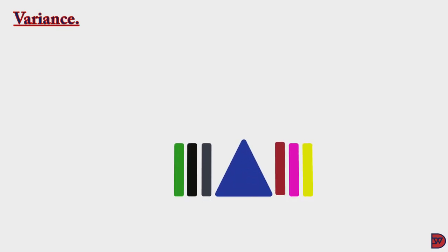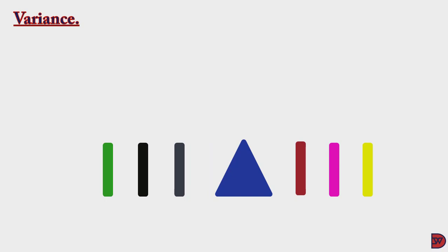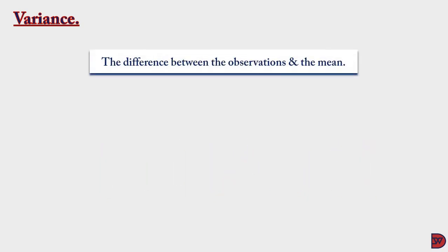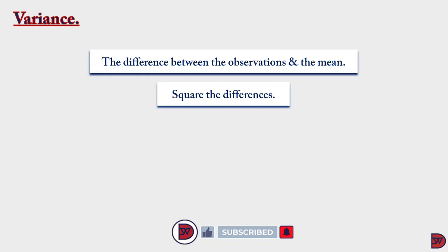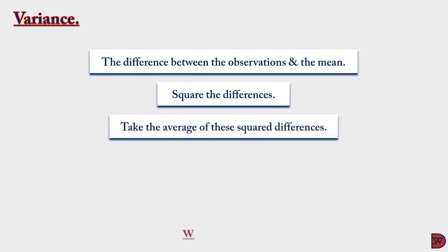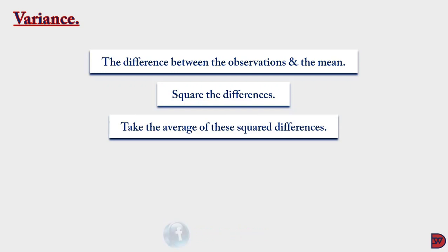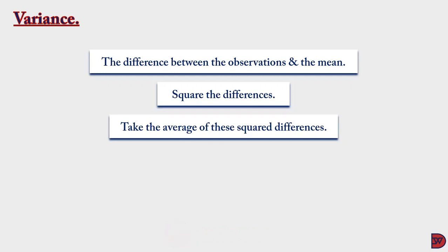The variance talks about how the values are clustered or distantly apart from the mean. To get the variance, we find the difference between each variable and the mean, square those differences, and then find the arithmetic average of the squared differences. If the variance is higher, it means the observations are distantly apart from the mean.